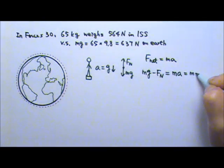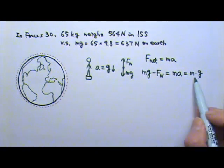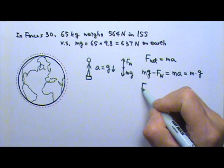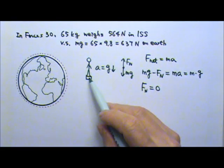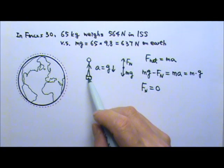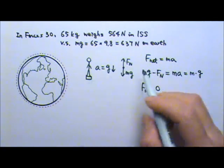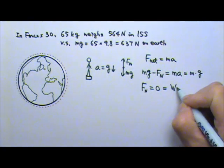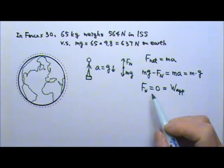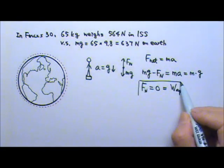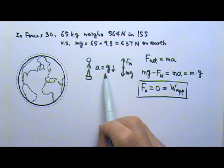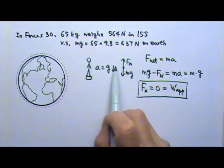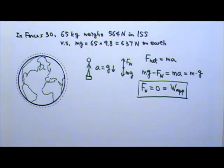Since a is g, mg minus normal force equals mg, that gives you normal force is zero. How hard you push down on the scale is your apparent weight. So your apparent weight is zero. That means you are in a weightless situation if your acceleration is the same as the gravitational acceleration.